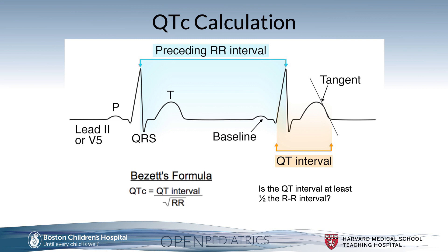Using Bazett's formula, the QTc is equal to the QT interval divided by the square root of the preceding R-to-R interval. If you don't have a calculator, a general visual check is to look at the R-to-R interval and ask whether the QT interval ends at or after the halfway point between the R-to-R interval. If it does, it may likely be a prolonged QT. However, it is still very important to provide an exact calculation in milliseconds for the corrected QT interval.